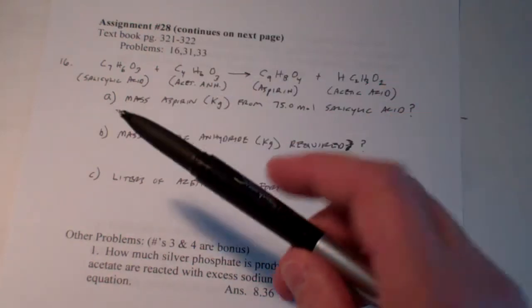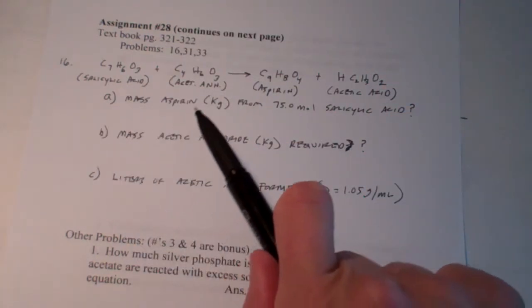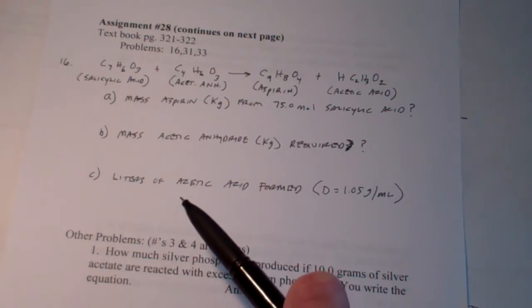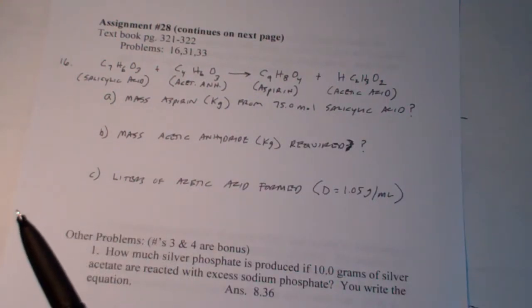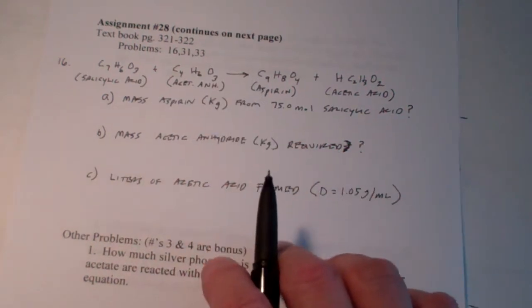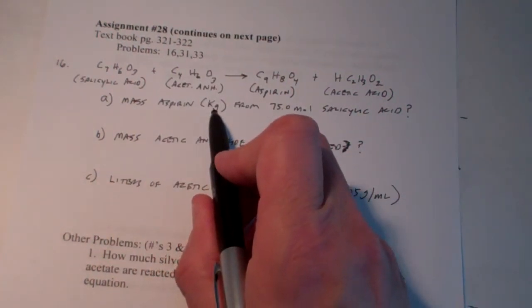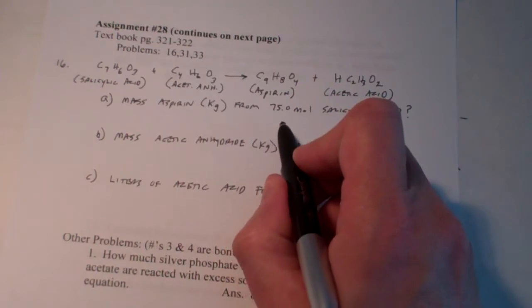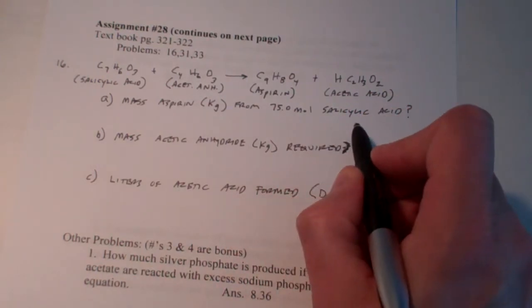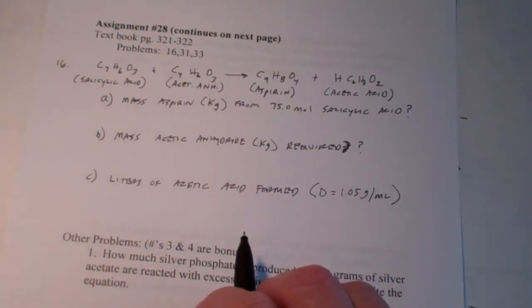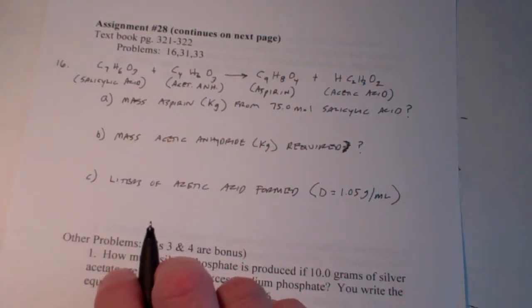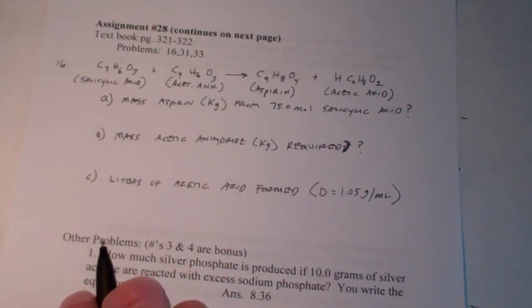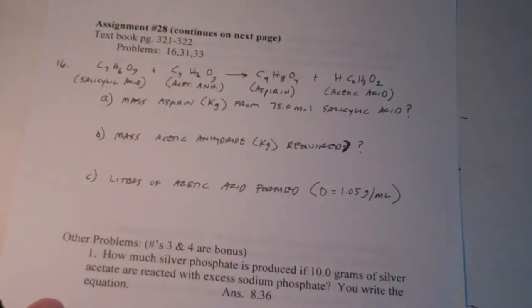On number 16, we have salicylic acid reacting with acetic anhydride to form aspirin and acetic acid. Part A says, what mass of aspirin can be produced? And it wants this answer in kilograms from 75.0 moles of salicylic acid. It's nice because we have our balanced equation — that's what we always start stoichiometry with. So, number one, balance our equation. That's squared away.